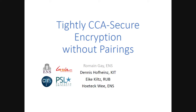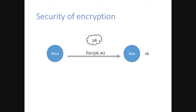Thank you for the introduction. First, I will recall the definition of CCA security. Suppose Alice wants to send a message to Bob through an insecure channel, and suppose that Alice and Bob do not share any secret key. So they use public encryption, where Bob generates a secret key he keeps for himself and a public key he gives to everyone, thanks to which Alice can encrypt the message. The basic security notion we want is that if an adversary eavesdrops on a ciphertext, it should not learn any information about the plaintext.